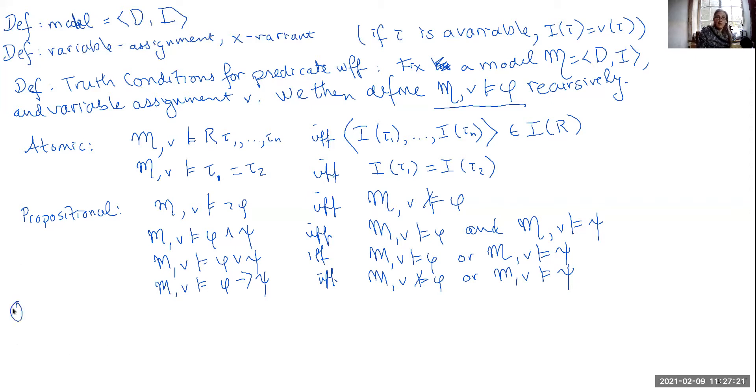It's unsurprisingly the quantified formulas that are the interesting one. This is where our notion of a variable assignment or an X variant comes into play. We've got two quantifiers to consider. We'll look at the universal one first. Something of the form for all X phi will be true on a variable assignment if and only if, for every X variant V prime, phi, so the formula without the quantifier, is true on that variant.